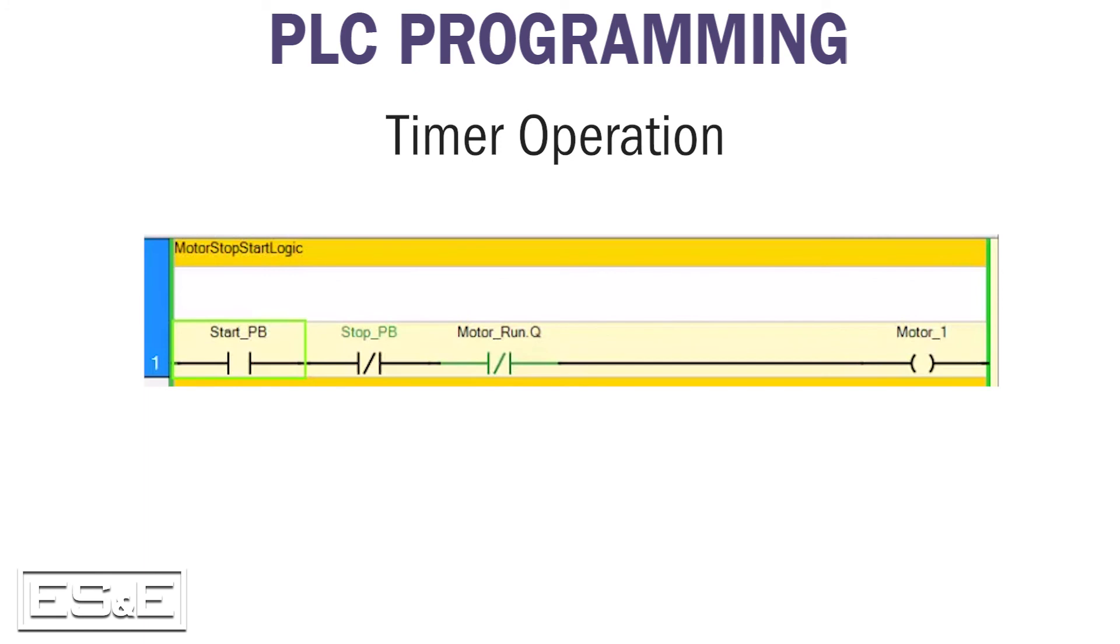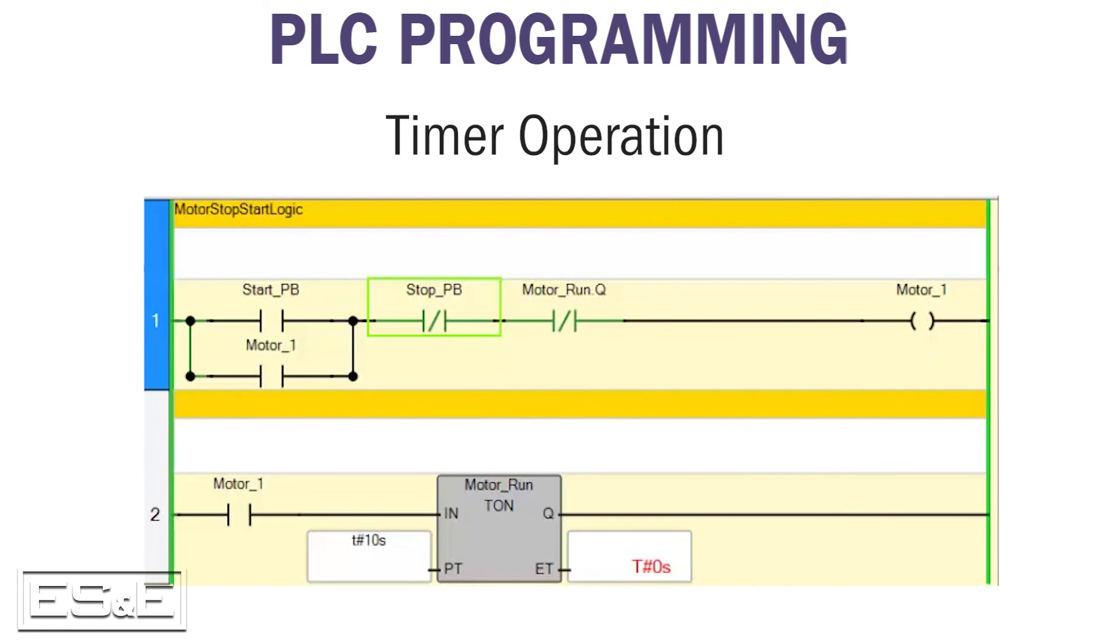Going back to the motor example, when the start push button is pushed, it will solve true because an examine on instruction is used. The stop button is not being pushed, so it will solve true because an examine off instruction is being used. Same with the motor run timer done bit. As long as the timer is not done, the done bit will be true. The rung will solve true and the motor 1 output will turn on. The problem with this logic is that when the start button is released, the motor will stop. To keep the motor running after the start button is released, the motor 1 output bit is used as an examine on instruction in a branch around the start button. The motor 1 bit will be true in the very next program scan after it is turned on. This is known as a sealing circuit.